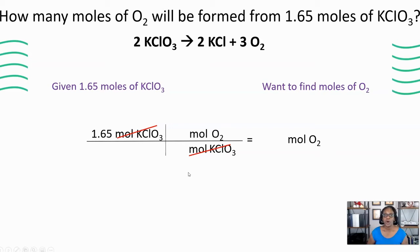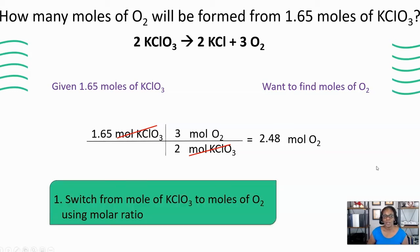To determine the ratio, we look at the coefficients in the balanced chemical equation. Potassium chlorate has a coefficient of two and oxygen has a coefficient of three. Once we have our ratio, now we can just complete our multiplication and our division. Multiply across the top, take that answer and divide by two, and you will get 2.48 moles of oxygen. So to summarize: we have one step — we're switching from moles of potassium chlorate to moles of oxygen using the molar ratio.